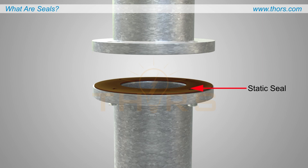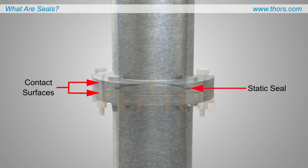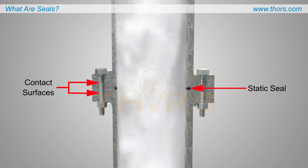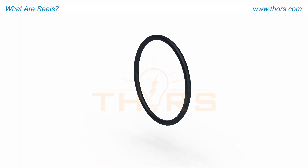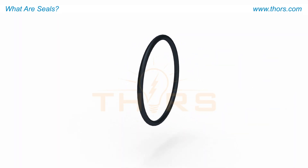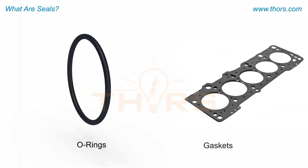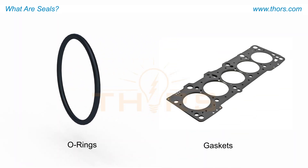Static seals provide sealing between contact surfaces that do not have any relative movement. The most commonly used static seals are O-rings and gaskets.